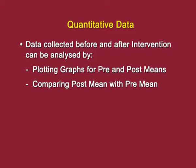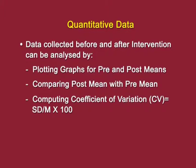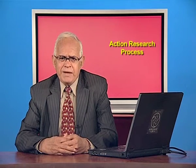Another approach is to compute the coefficient of variation. From the pre means, you can calculate the standard deviation and mean and compute the coefficient of variation. For the post also, you can compute the coefficient of variation using the formula SD divided by mean, multiplied by 100, then compare these variations. The variation in the post test will tell you whether all the students of that particular group understood the content to the same extent — that is, whether the intervention used during action research has been beneficial.